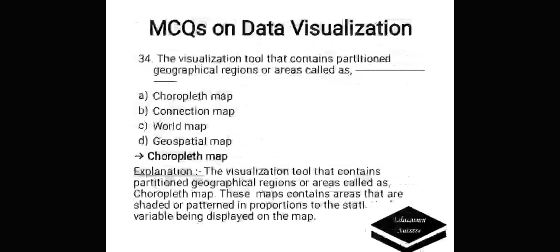The visualization tool that contains the partition of geographical regions or areas is called — Options are: A. Choropleth map, B. Connection map, C. World map, D. Geospatial map. Correct answer is choropleth map. The visualization tool that contains partition of geographical regions or areas is called choropleth map. This map contains areas that are shaded or patterned in proportion to the statistical variable being displayed on the map.